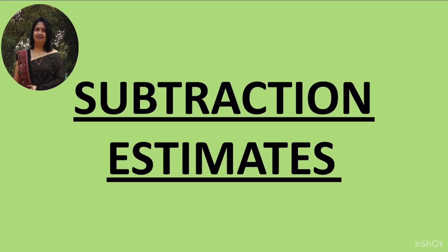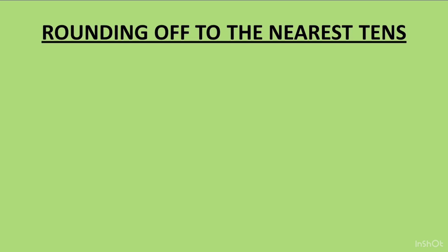Estimate means rounding off. For example, if somebody asks the distance between Delhi and Agra, we could say it is around 200 km. The actual distance is 233 km, but we've rounded it off to give an approximate value. Giving an approximate value is called estimation. We covered rounding off in a previous video for addition, and now we'll do rounding off for subtraction.